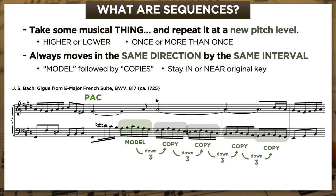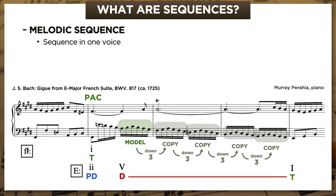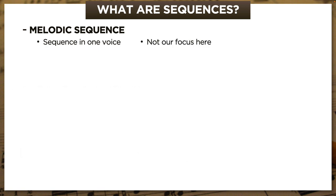The excerpt starts with a PAC in F-sharp minor, and then immediately winds its way back into the tonic E through the dominant. But despite their differences, this sequence has one really important thing in common with the Mozart: the sequence itself is in a single voice. On that basis, it's what we call a melodic sequence. These happen all the time and are true sequences, but they're not actually going to be what we focus on here or in later videos.